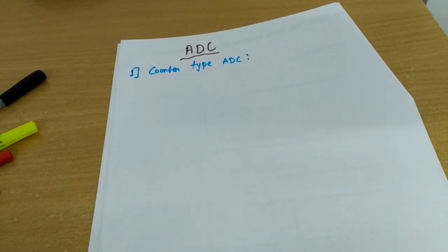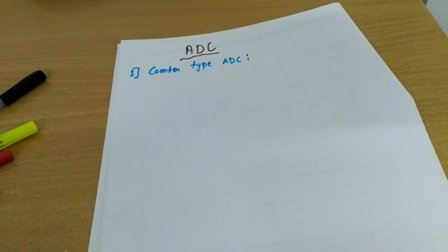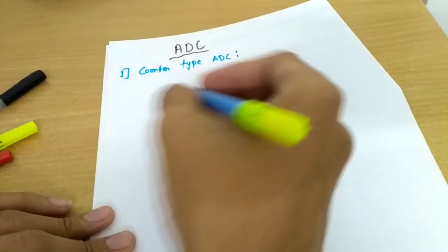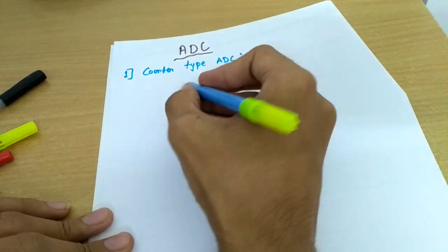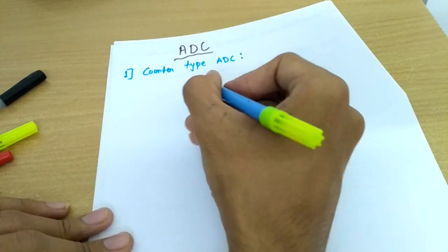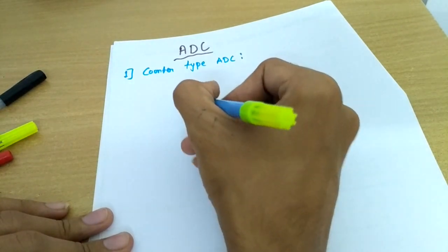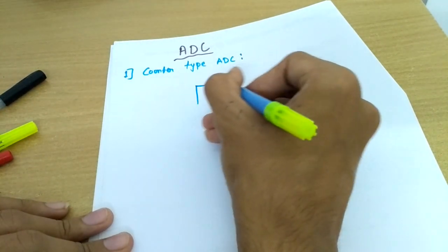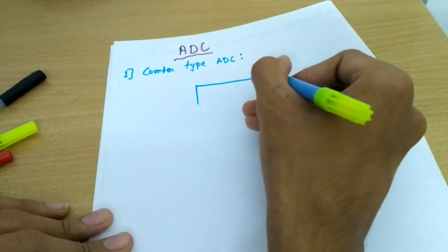We will be discussing ADC, that is Analog to Digital Converters. The very first type is counter-type analog to digital converters. Let me draw the logical diagram of it.